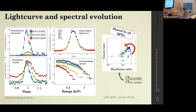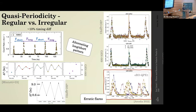One feature has to do with the spectral evolution of the QPE flares. We heard from Ricardo and Giovanni how QPE flares seem to rise earlier in the harder bands, and also decay faster, and have this typical hysteresis loop. This is one feature that every QPE model should be able to explain. Another interesting feature is this short-long recurrence time behavior we just heard about.